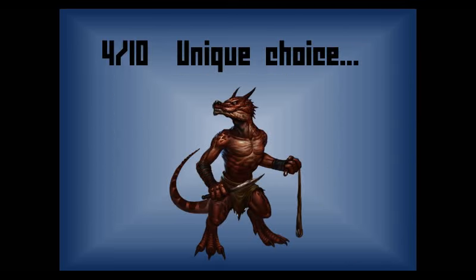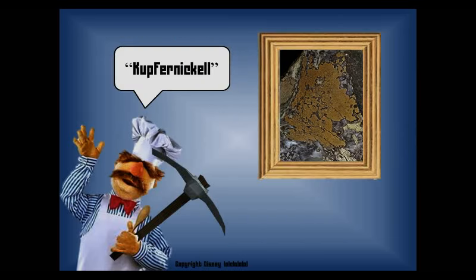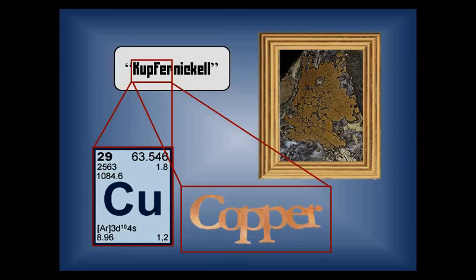Cobalt is named for the evil kobolds in German mythology, because the metal was hazardous and troublesome as well. So a unique choice. Nickel, this name comes from part of the Swedish word for a copper coloured ore, kufa-nickel. This is also where copper comes from, as well as the Cu symbol.